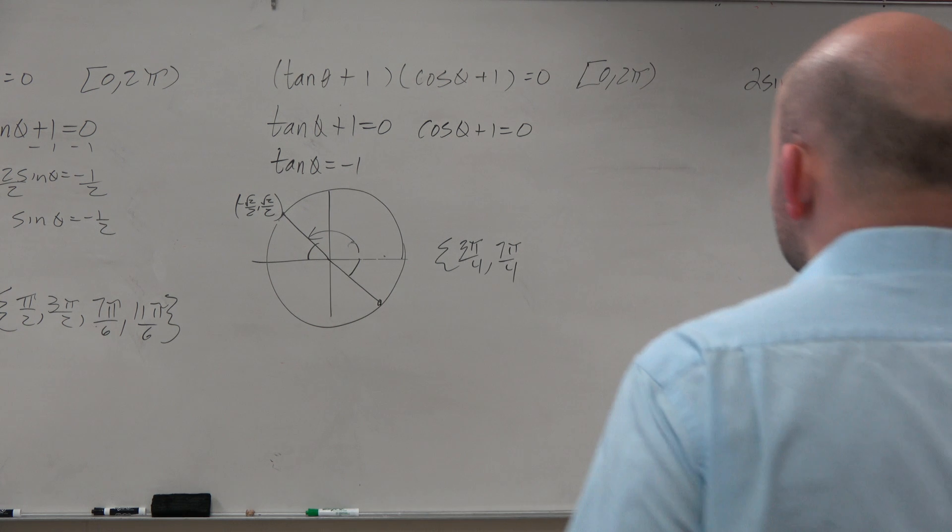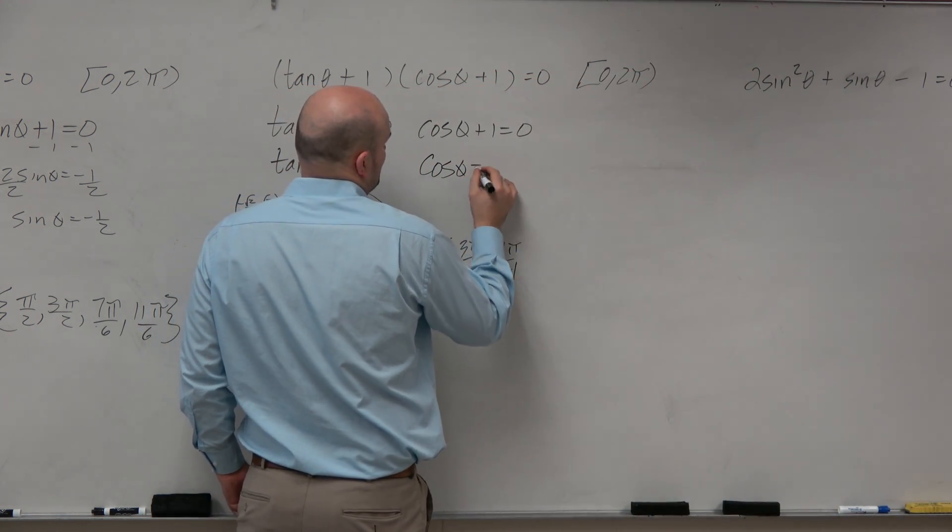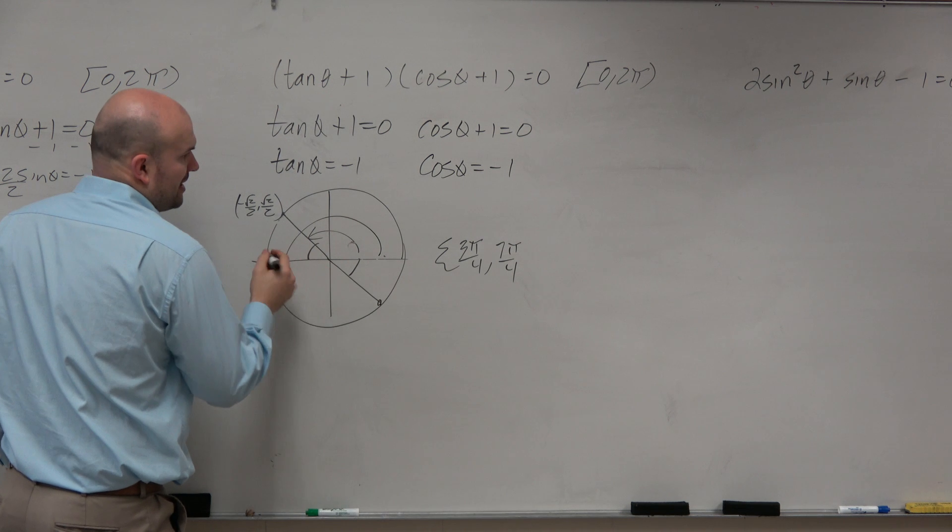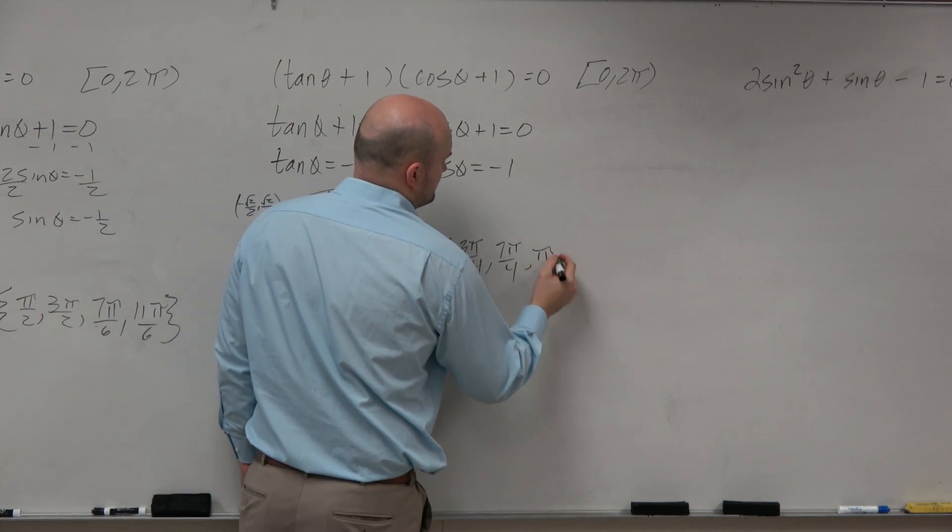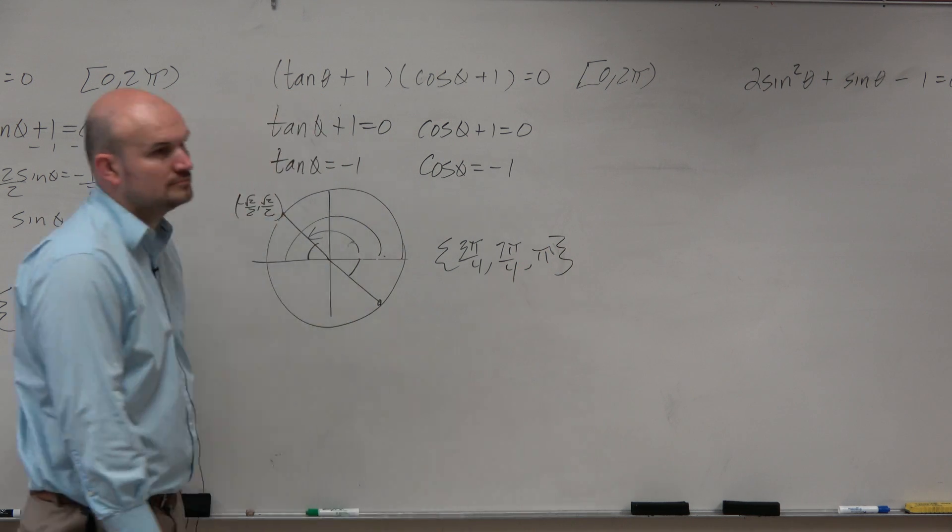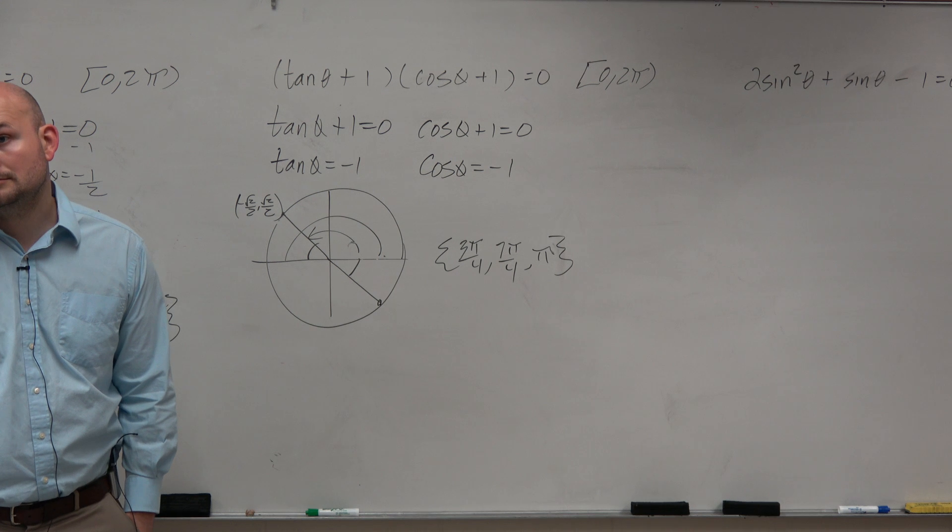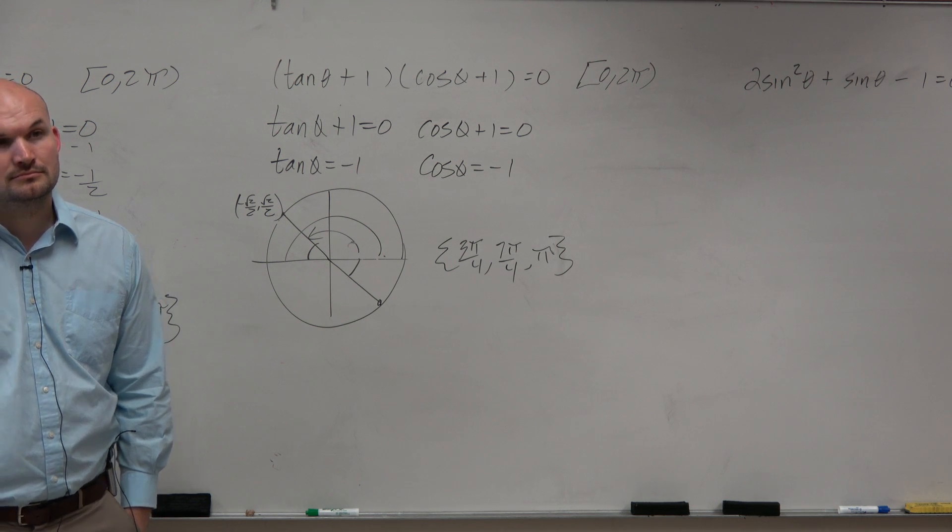Now, moving on to the last one. When is cosine of theta equal to negative 1? And that's just equal to pi. Brackets. OK. Not brackets, but squiggly dinkies, I call them.